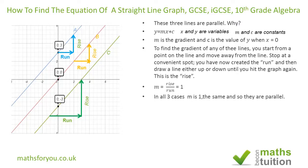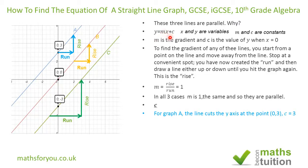Now, c is where the graph crosses the y-axis. For graph A, it crosses the y-axis at the point 3, so we know m = 1 and c = 3. The equation of graph A is therefore y = 1x + 3. You don't need to write the 1 — you can simply write y = x + 3. In fact, writing the coefficient 1 explicitly may cost you a mark in the exam, so write y = x + 3.